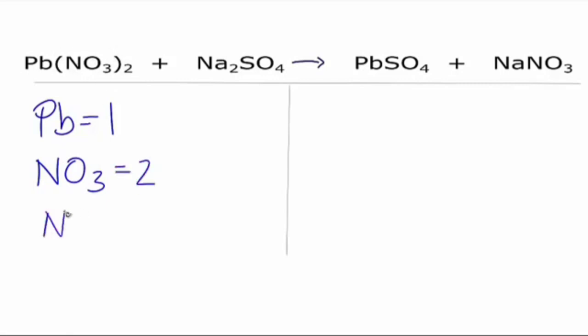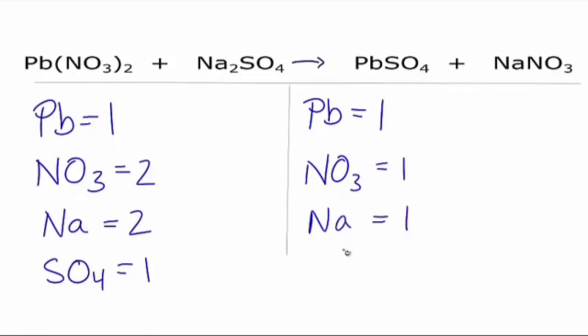On the product side, Pb equals one, NO3 we have one of those, Na we have one of those, and then SO4 we also have one of those. So looks like we have one Na here and two, so those aren't balanced. And our NO3 also aren't balanced.